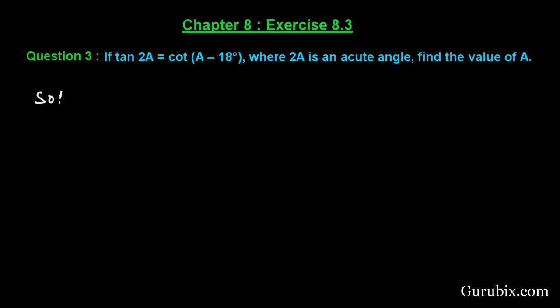Let us see how to solve this question. We are given that tan 2A equals cot(A - 18°). This is given to us, and we know that we can write cot(90° - θ) equals tan θ.